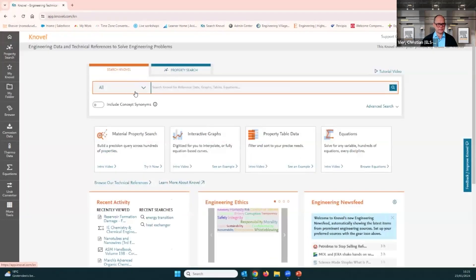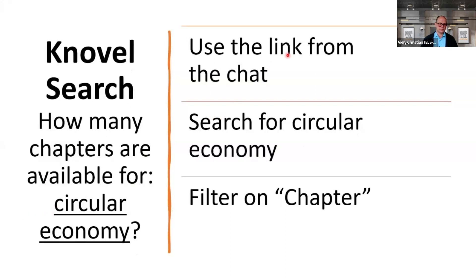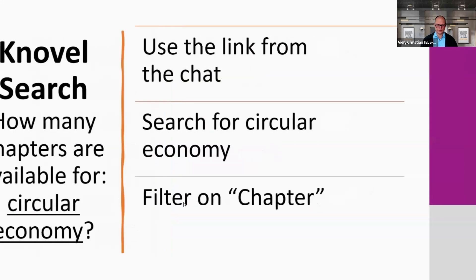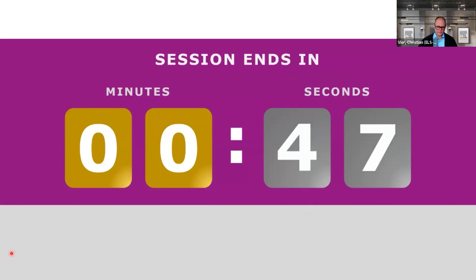Now I want you to do the following exercise. I'll give you the link to Novel in the chat. Instead of searching for 'energy transition,' search for 'circular economy,' filter on chapters, and let me know how many chapters you find. Paste the result in the chat box. You have one minute — I'll be quiet to give you focus time.